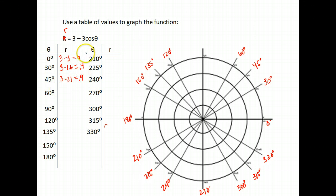60 degrees, the cosine of 60 is 0.5 times 3 is 1.5 so I have 3 minus 1.5 which is 1.5. When I get to 90, the cosine of 90 is 0 times 3 is 0 so I have 3 minus 0 is just 3.